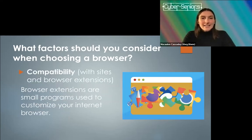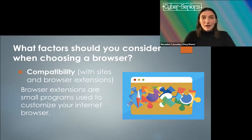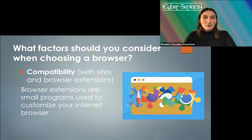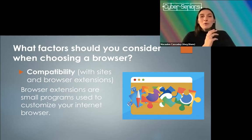One of the last things is compatibility — compatibility with sites and browser extensions. When I say compatibility with websites, I mean the kind of program that websites are running on. Sometimes certain browsers will not be compatible and will not be able to properly access certain websites — I've seen it happen across the board from Safari to Firefox to Chrome. Browser extensions are small programs used to customize your internet browser. Things like ad blockers or Grammarly, which helps with grammar as you're typing emails on the internet, are all browser extensions — little things you can add to give more functionality to your browser.